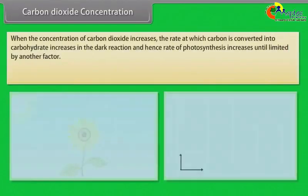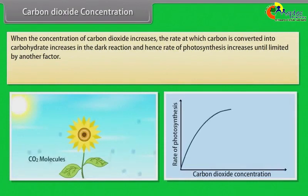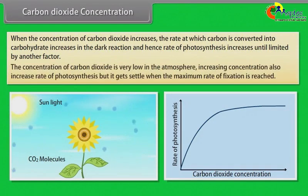Carbon dioxide concentration: When the concentration of carbon dioxide increases, the rate at which carbon is converted into carbohydrate increases in the dark reaction. Hence, the rate of photosynthesis increases until limited by another factor. The concentration of carbon dioxide is very low in the atmosphere. Increasing concentration also increases the rate of photosynthesis, but it gets settled when the maximum rate of fixation is reached.